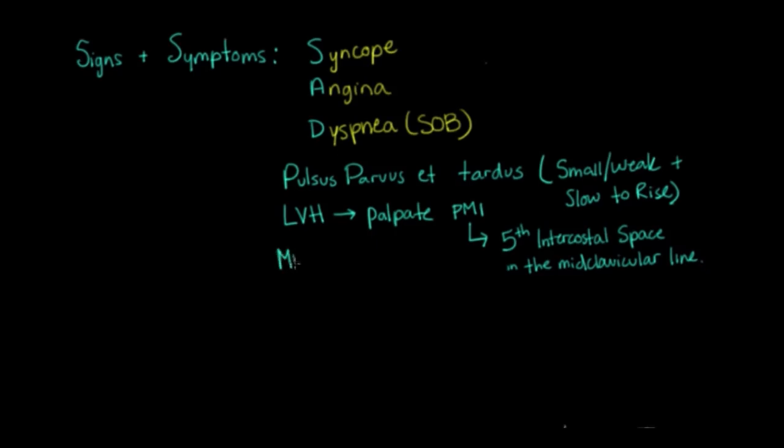Another thing that you can see in aortic stenosis is MAHA or microangiopathic hemolytic anemia. And what happens here is that red blood cells actually get sheared as they go across the really tight valve. And so the cells are actually broken apart, and you can get an anemia that shows red blood cells that have kind of been broken apart. And that's due to the aortic stenosis.